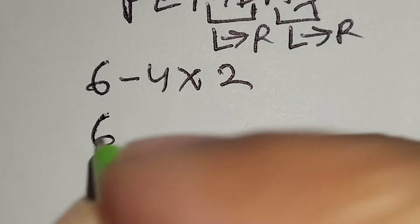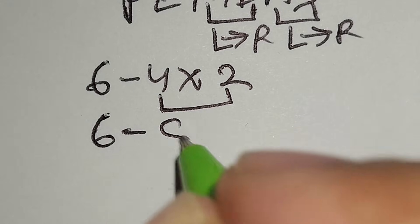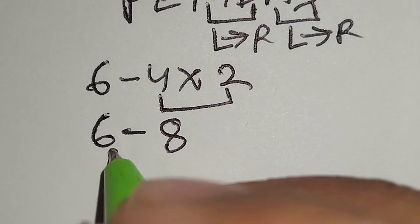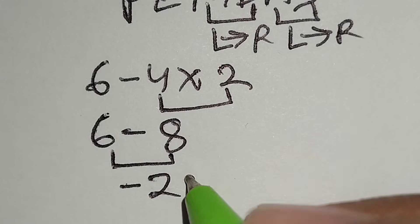Therefore, this 6 minus this 4 times 2 gives us 8. 6 minus 8 gives us negative 2. And this is the correct answer.